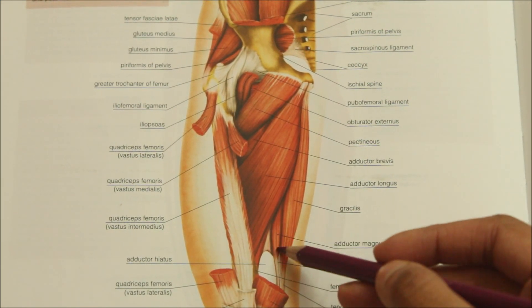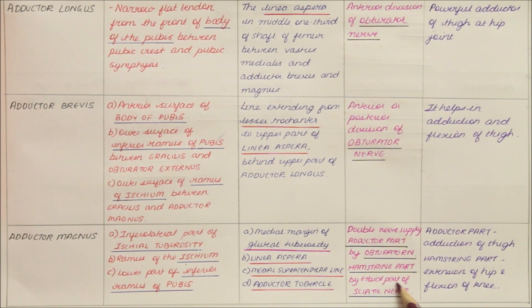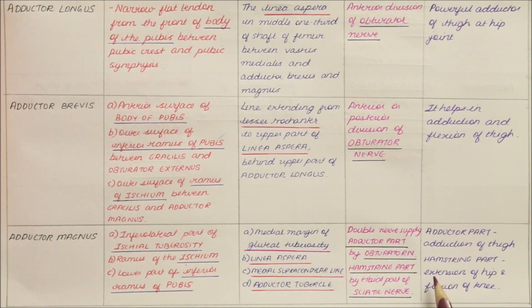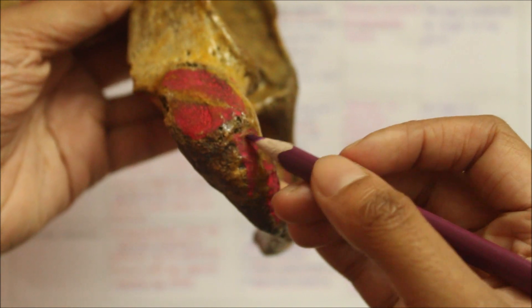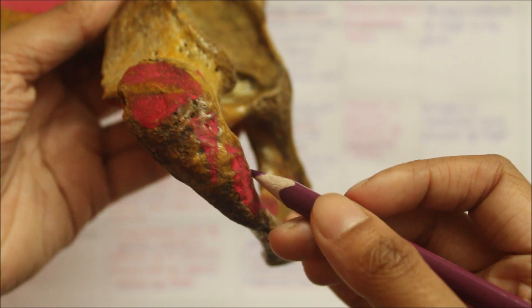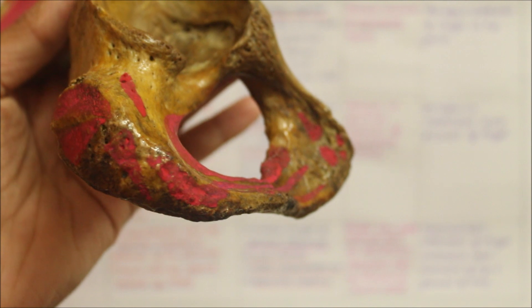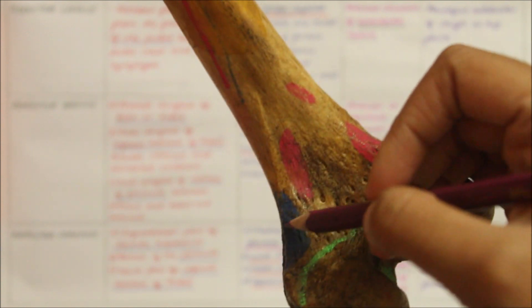The adductor magnus is supplied by a double nerve supply. The adductor part is supplied by the obturator nerve and the hamstring part is supplied by the tibial part of the sciatic nerve. The action of the adductor part is adduction of the thigh, while the hamstring part produces extension of the hip and flexion of the knee. As a whole, it originates from the infralateral part of the ischial tuberosity, the ramus of the ischium, and the lower part of the inferior ramus of the pubis, and inserts into the medial margin of the gluteal tuberosity, the linea aspera, the medial supracondylar line, and the adductor tubercle.